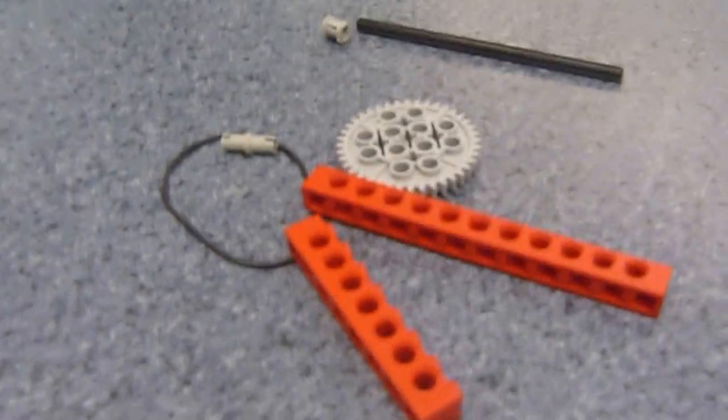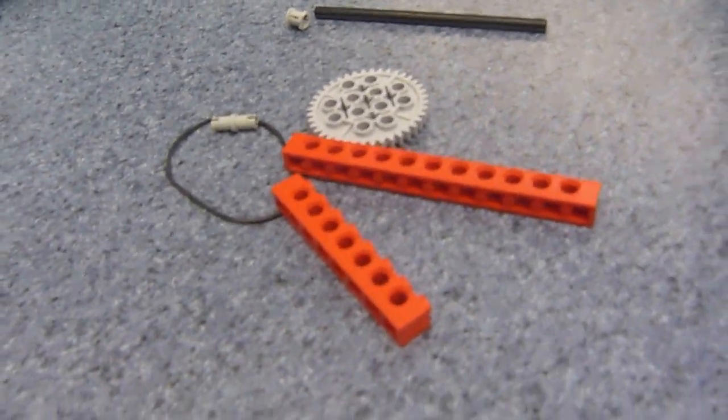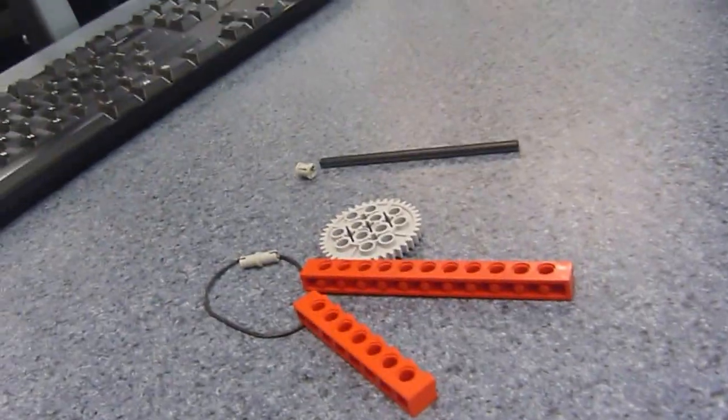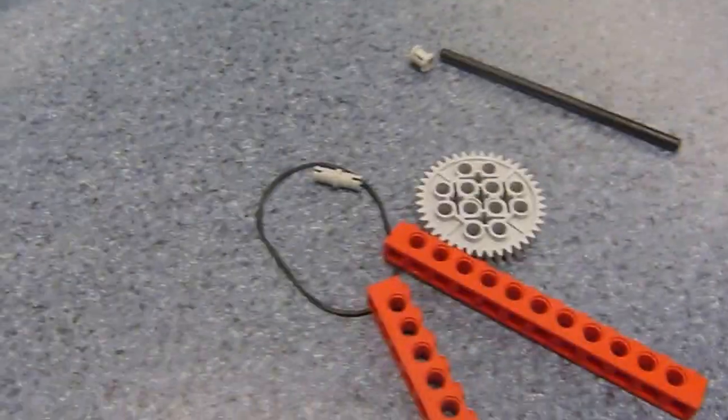This week at the LEGO Landstation, me and my partner used the Crazy Actions Contraptions Kit. And we're going to make the Annoy-O-Matic.